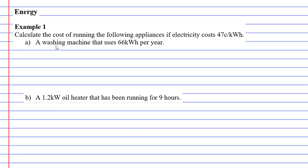In this video, we are going to complete example one, and we're going to calculate the cost of running some appliances. They've given us a cost for electricity, which is 47 cents per kilowatt hour. When you're picking electricity companies, this is what you want to look for. This tells you how much your electricity is going to cost.